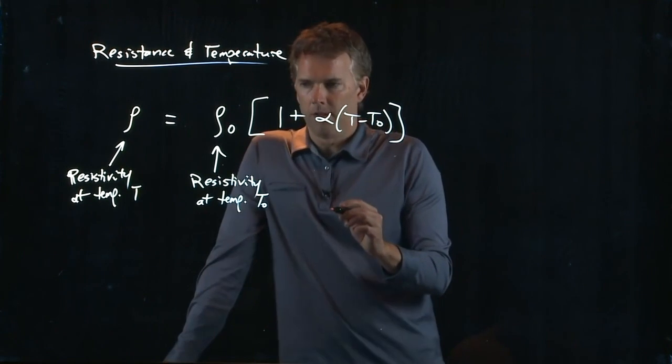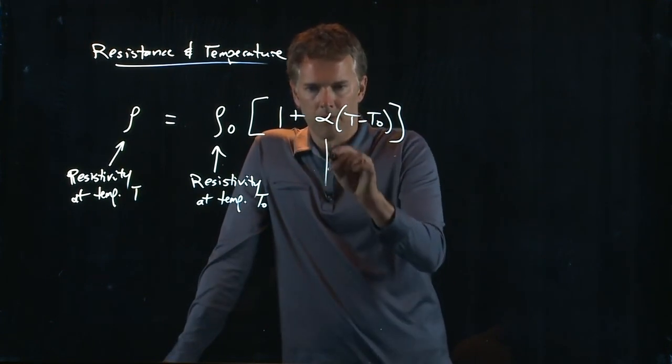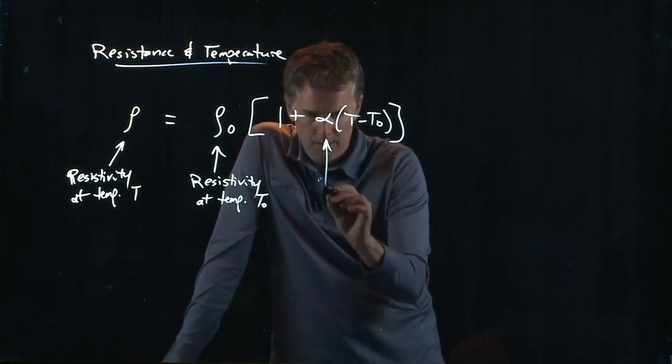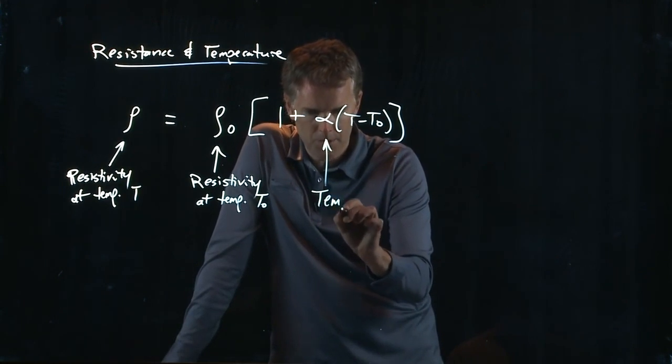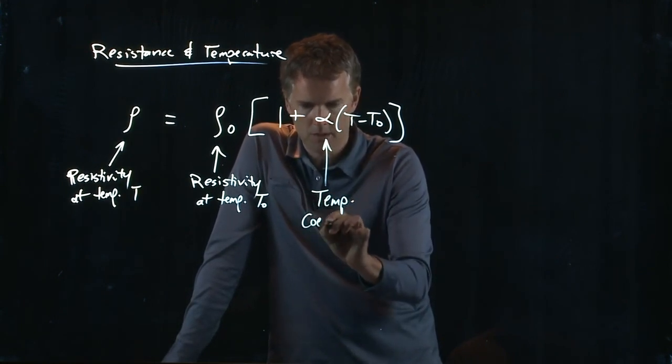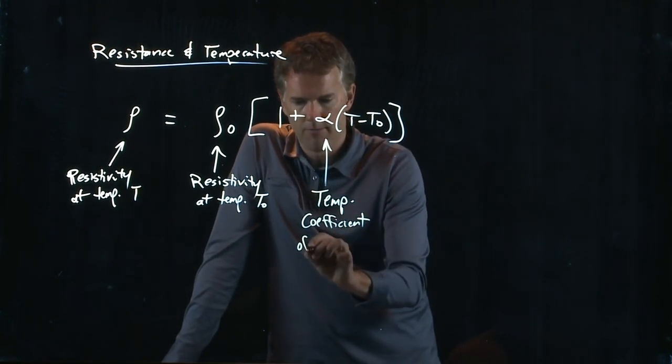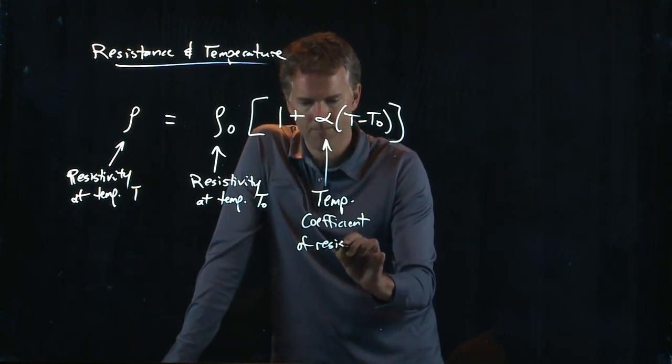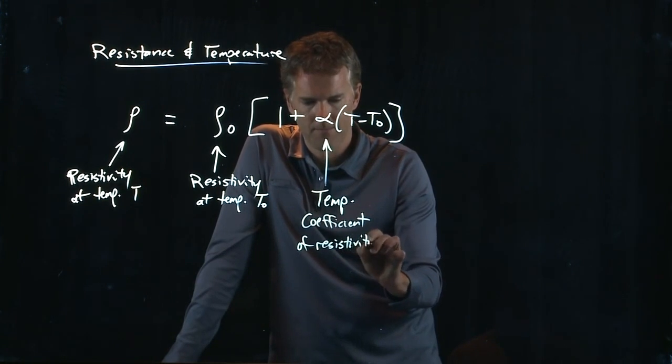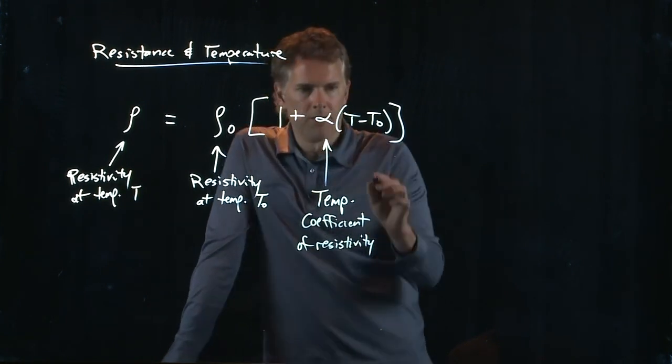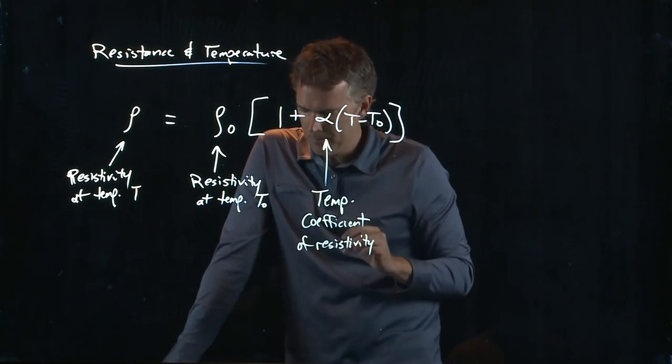What are all these things? One is, of course, the number one. What's alpha? This is called the temperature coefficient of resistivity. This is still the temp T and the temp T naught.